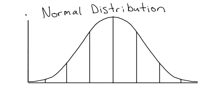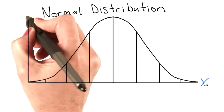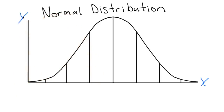This is a normal distribution, or a bell curve. On the x-axis, we have the scores. On the y-axis, we have frequencies. Frequencies are how often a score occurs.